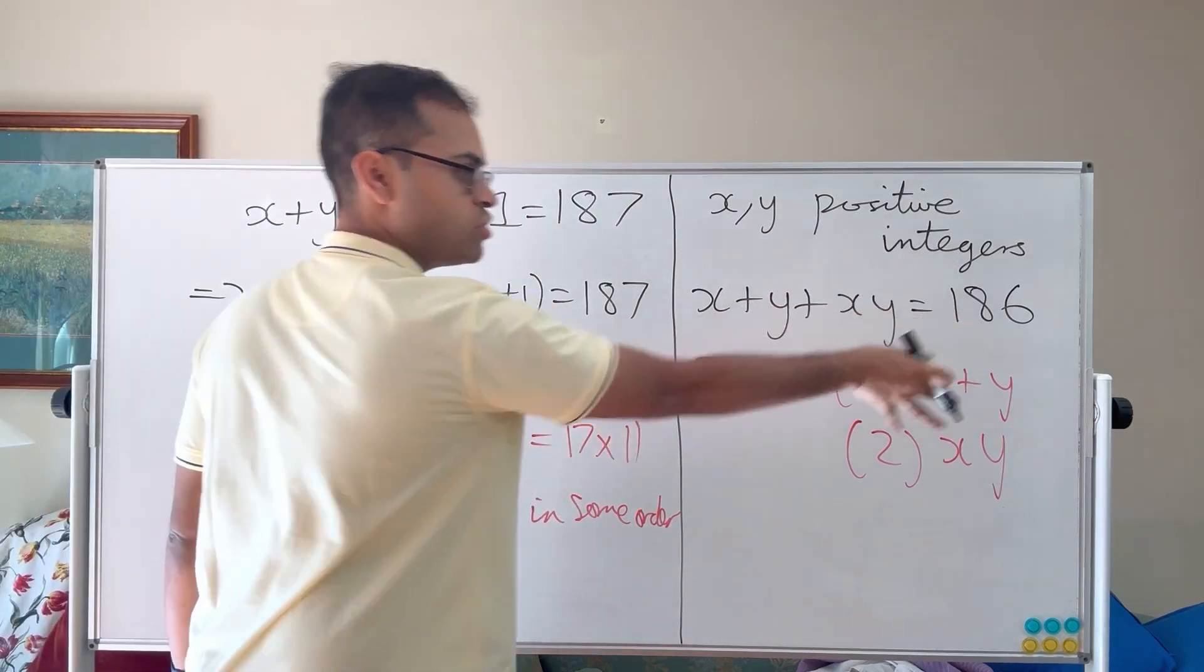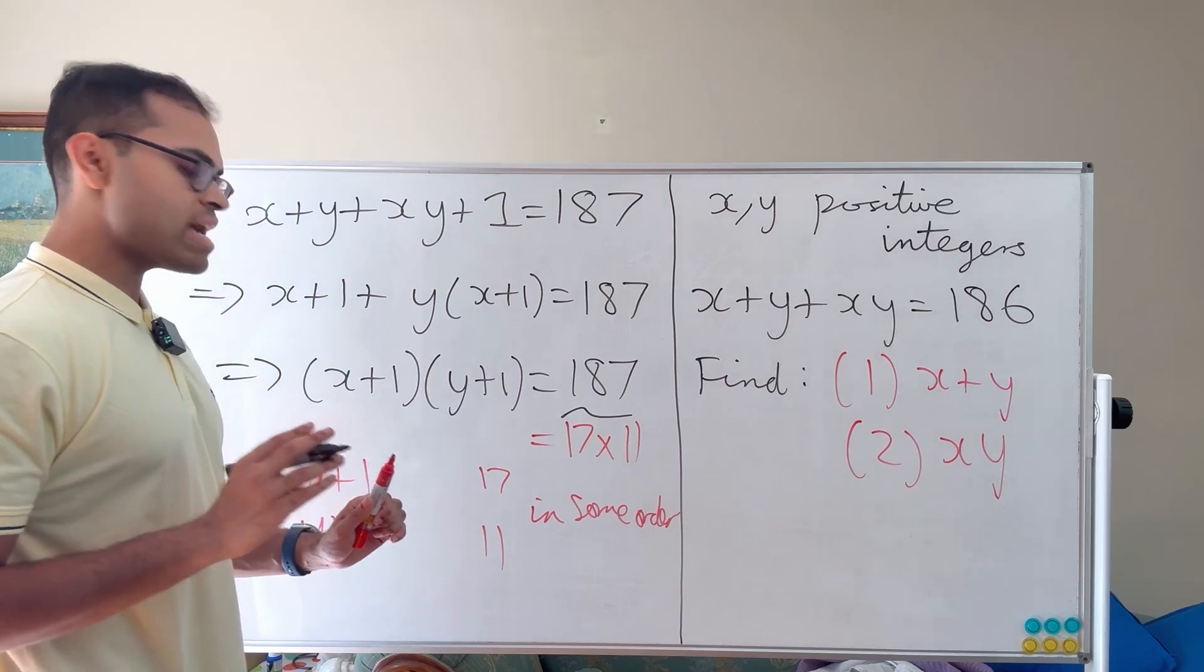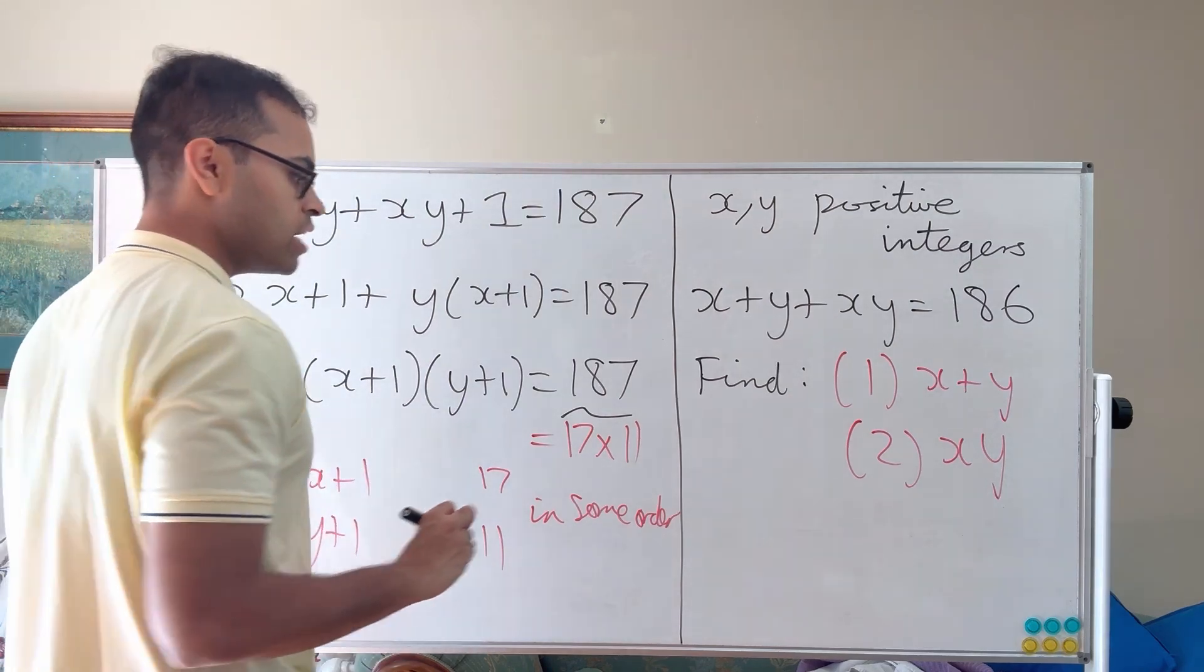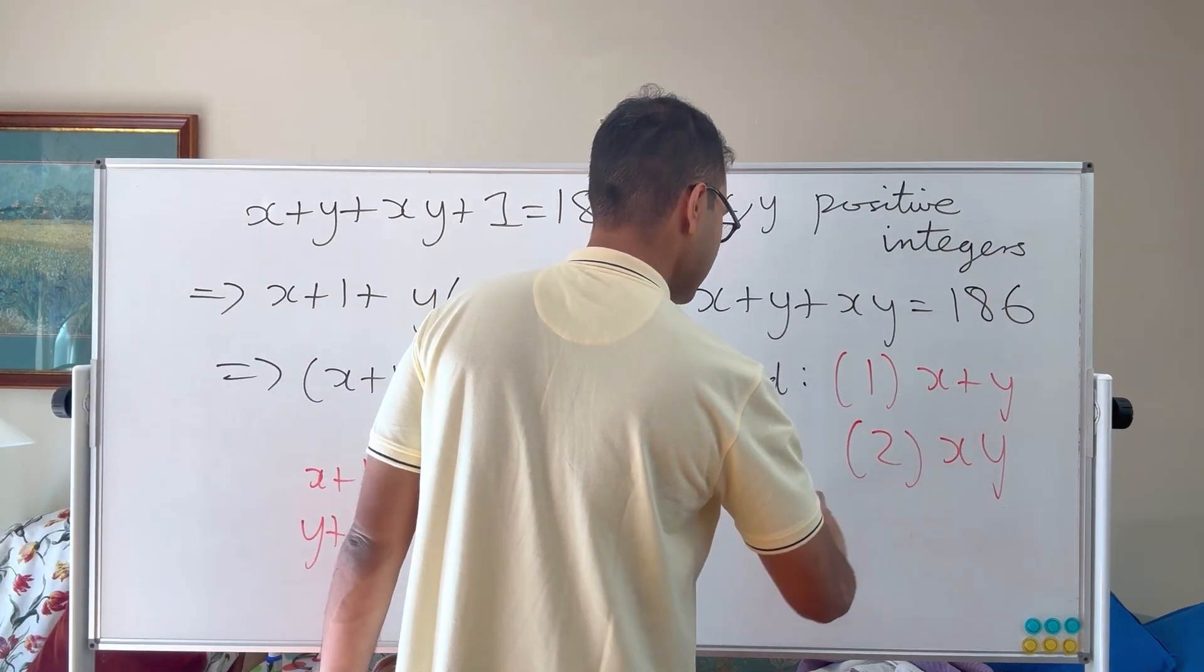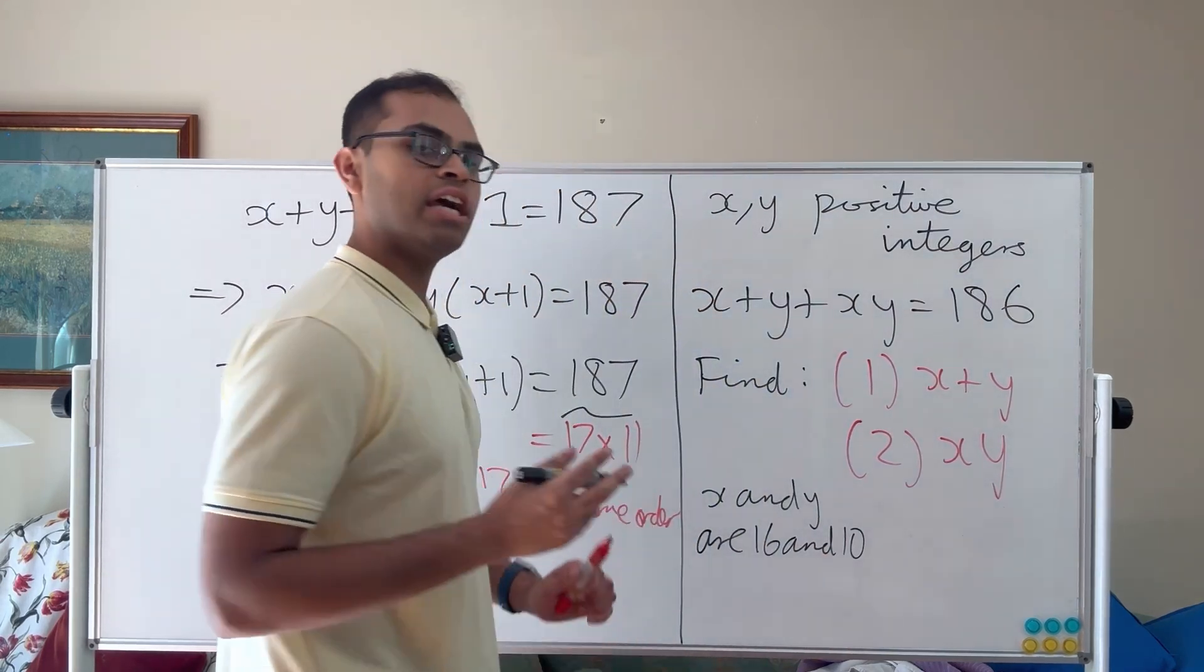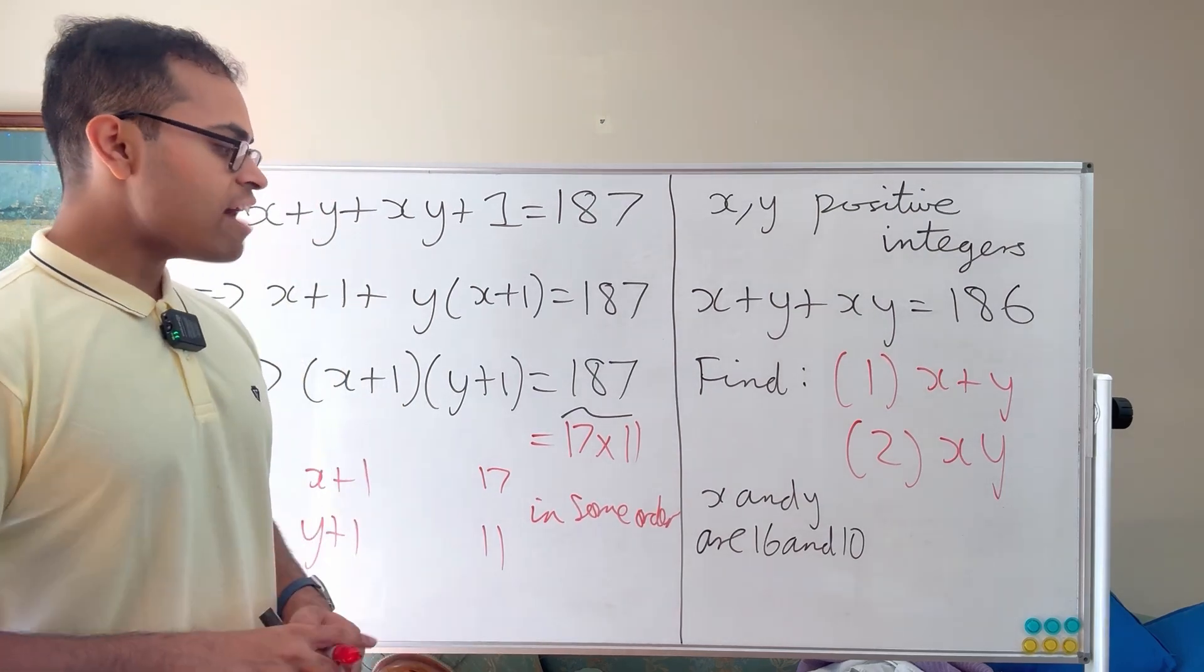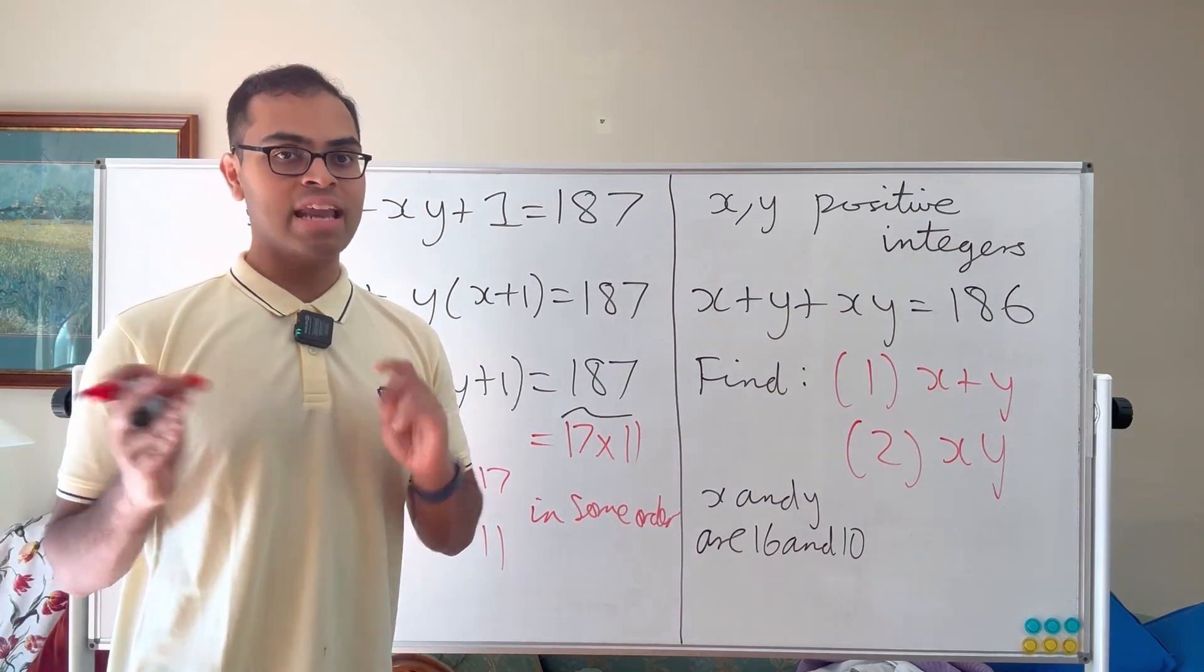The interesting thing is those are symmetrical. So once you've got this, you know that in some order x and y are going to be 16 and 10. So x and y are 16 and 10. I'm not putting respectively here because x could be 10, y could be 16, or x could be 16, y could be 10. But therefore it doesn't matter what order when you're adding them up.